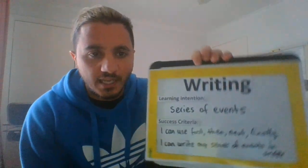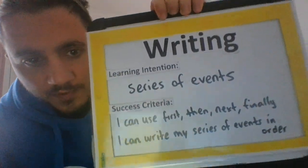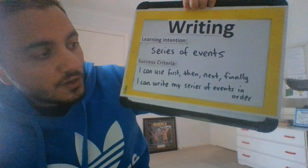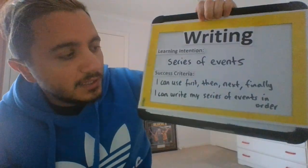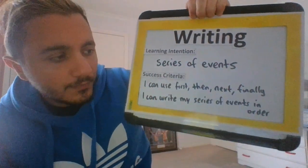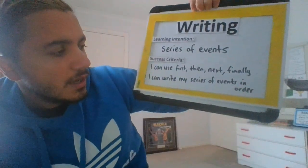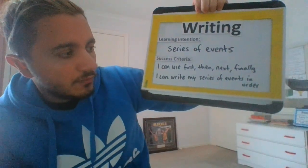Hi, Mr. Rico again, and it's time for writing. We're up to our series of events, so let's have a look at our learning intention for today: series of events. The success criteria: I can use first, then, next, and finally. Remember those words from the end of last term? Also, to be successful, I can write my series of events in order.